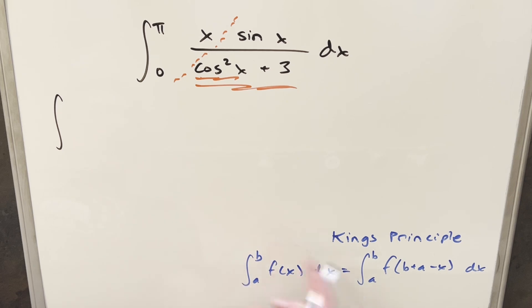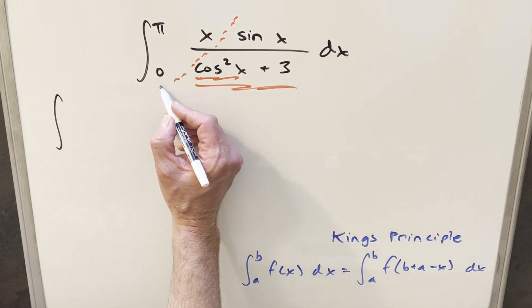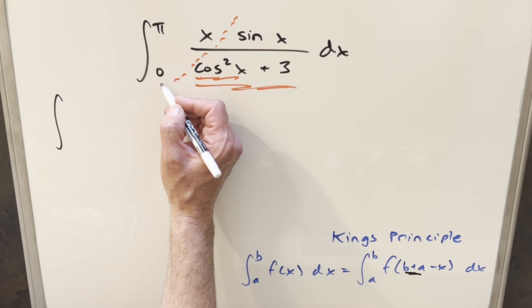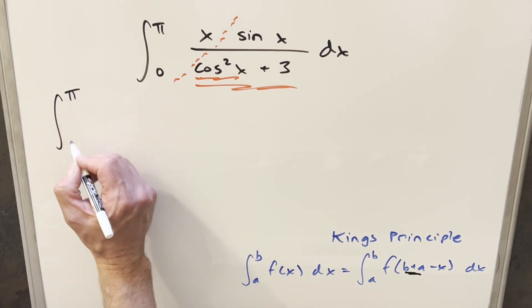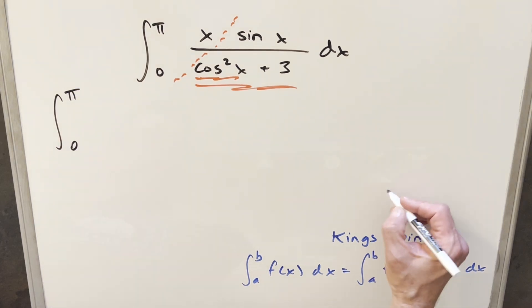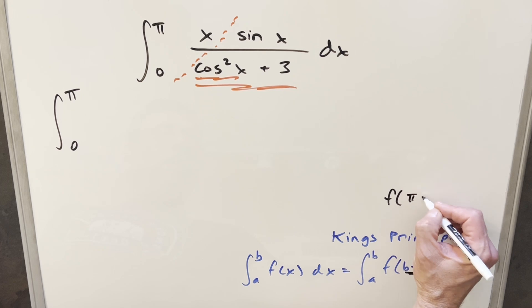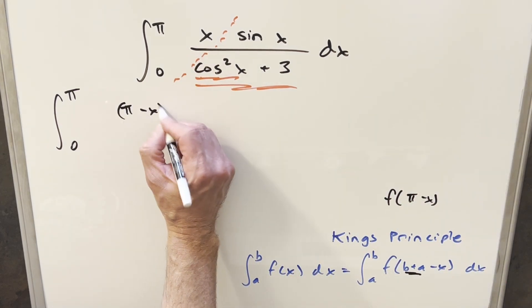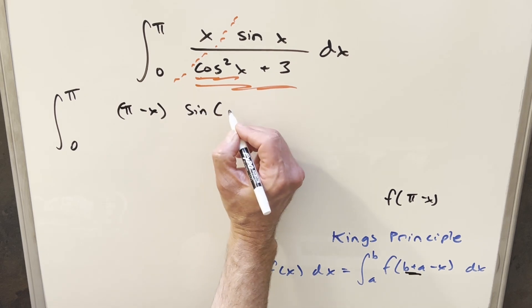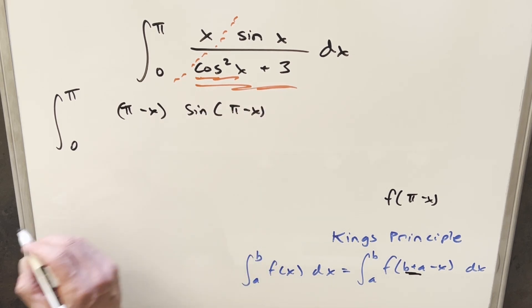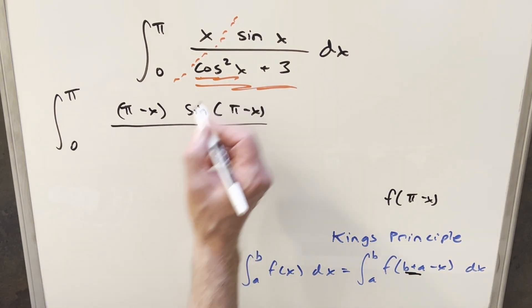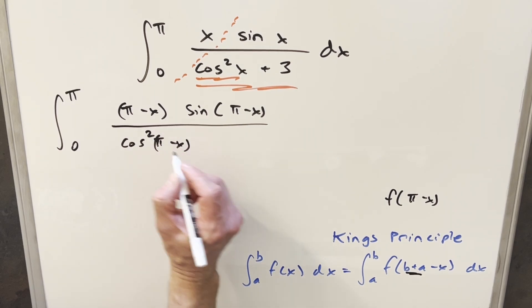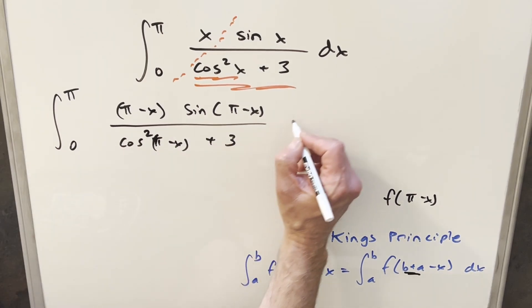What we're going to do is rewrite this where our b plus a value here is just going to be pi plus 0 or pi. So our bounds stay the same, going from 0 to pi. And then we're going to be evaluating f at pi minus x. We just need to plug that in everywhere. So for our x value, this becomes pi minus x, this becomes sine of pi minus x. Then in the denominator, this becomes cosine of pi minus x squared plus 3 dx.